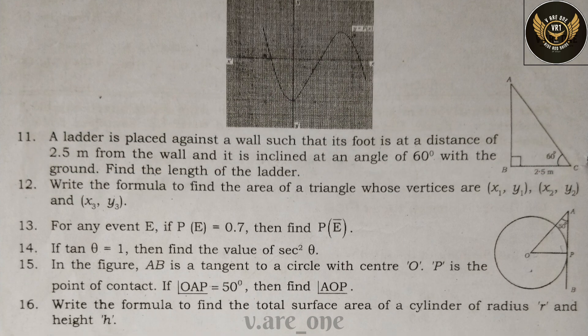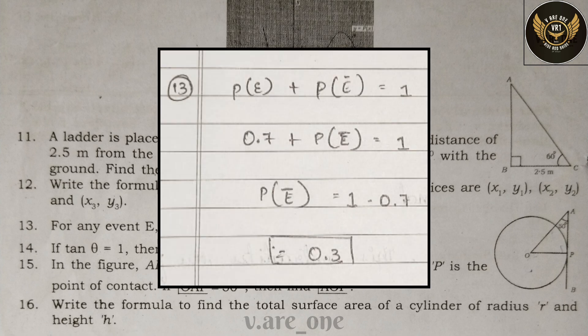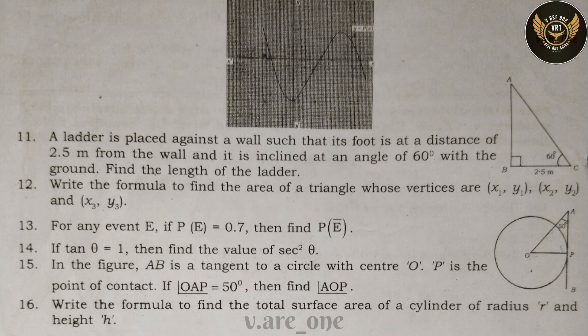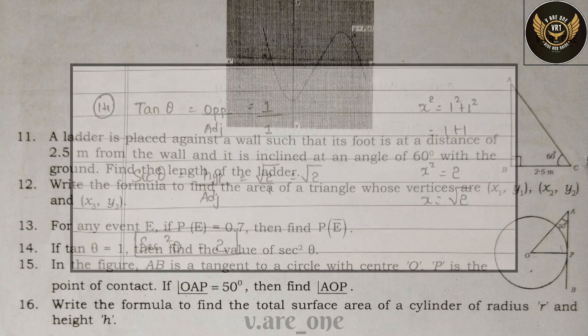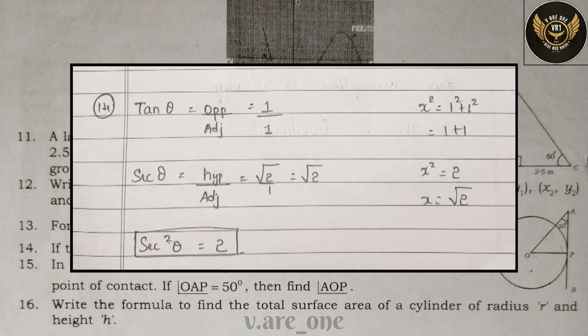For any event E, if P(E) = 0.7, then find P(not E). Answer: P(not E) = 0.3. If tan θ = 1, then find the value of sec²θ. Answer: sec²θ = 2.